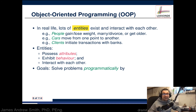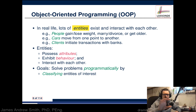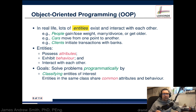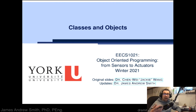With object-oriented programming, our objective is to solve problems programmatically by classifying entities of interest — we say we want this kind of object and that kind of object, and we determine what is relevant to our particular application. Entities in the same class share common attributes and behaviors, and we manipulate data representing those entities, where each entity is represented by specific values. In the next presentation we'll go into more depth about classes, objects, and object-oriented programming.